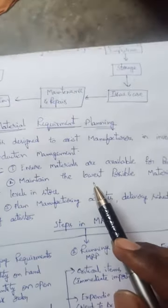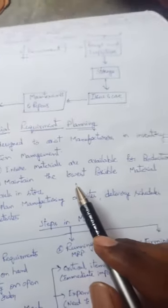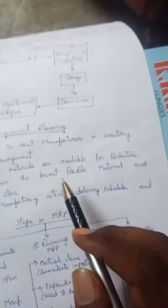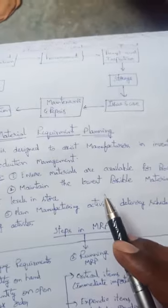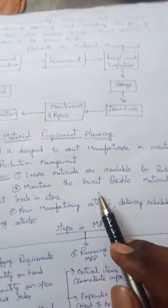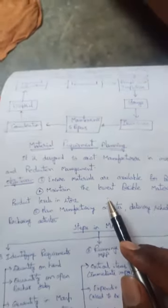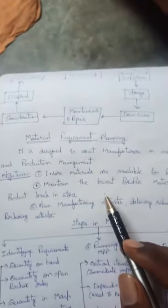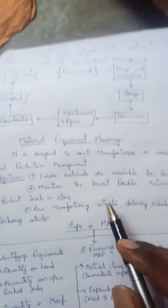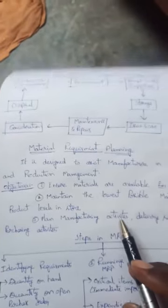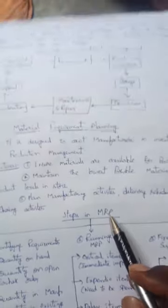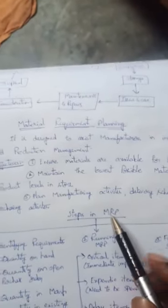The next objective is identifying the lowest possibility of raw materials handling costs. As discussed in the first unit regarding EOQ and different inventory levels, the manufacturer should identify the minimum possible supplier prices — they can maintain a good contract between the manufacturer and the supplier.